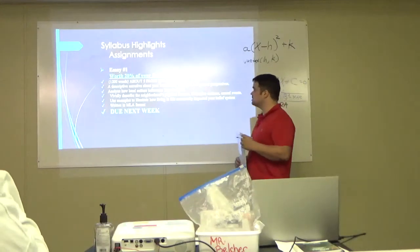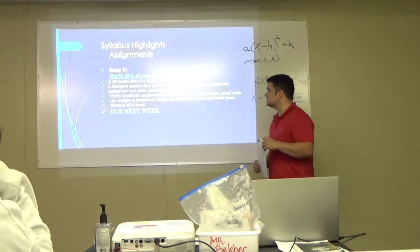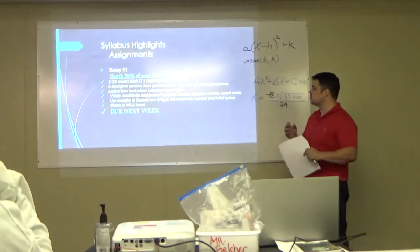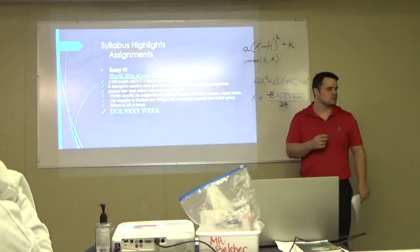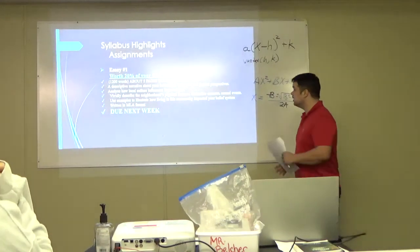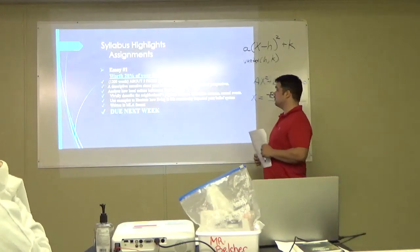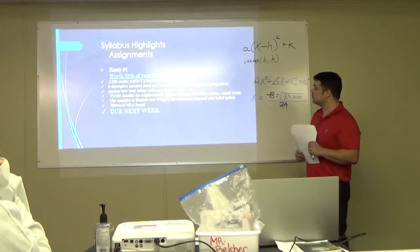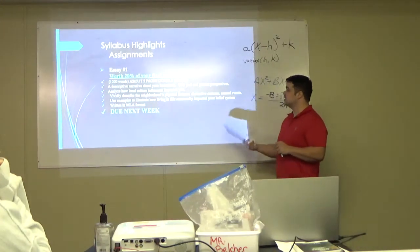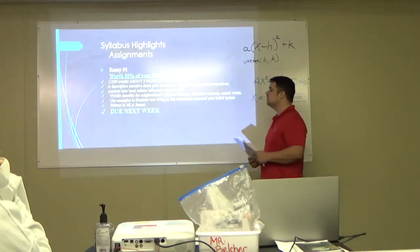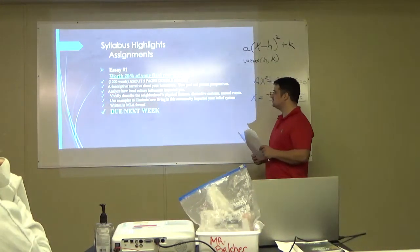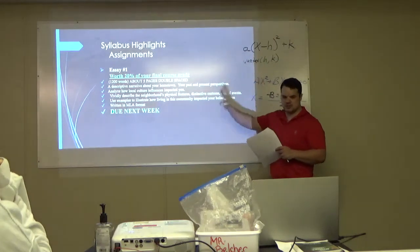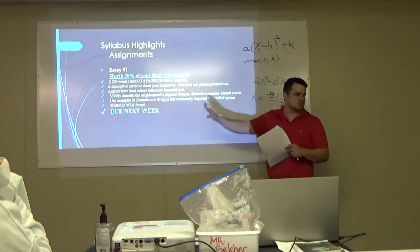So essay number one - this is one of the big essays. It's worth 20% of your final course grade and will be 1,700 words. It's a descriptive narrative about your hometown, past and present perspectives. Analyze how local cultural influences impacted you - famously describing their words, physical features, distinctive functions, and so on. We're not going to go into this because we discussed it last week.